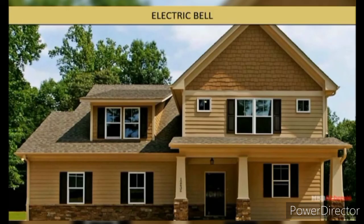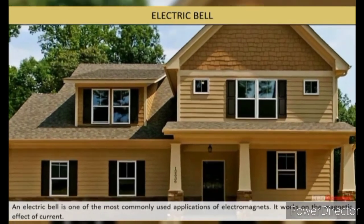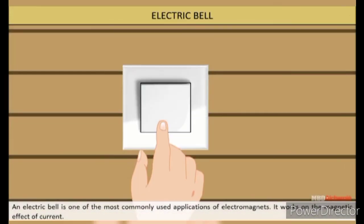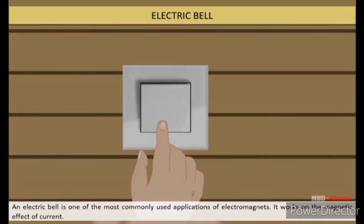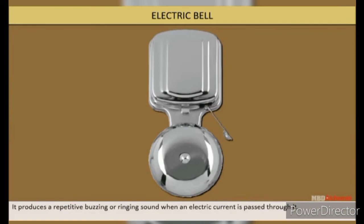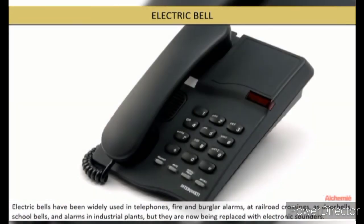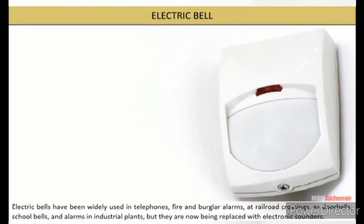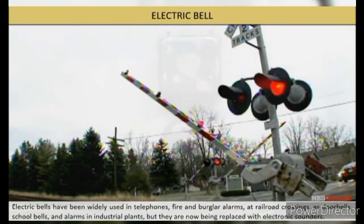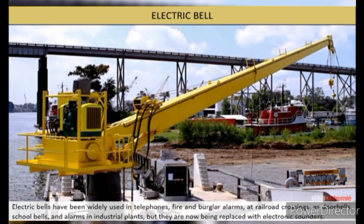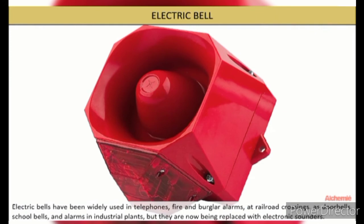Electric Bell: An electric bell is one of the most commonly used applications of electromagnets. It works on the magnetic effect of current. It produces a repetitive buzzing or ringing sound when an electric current is passed through it. Electric bells have been widely used in telephones, fire and burglar alarms, at railroad crossings, as doorbells, school bells, and alarms in industrial plants. But they are now being replaced with electronic sounders.